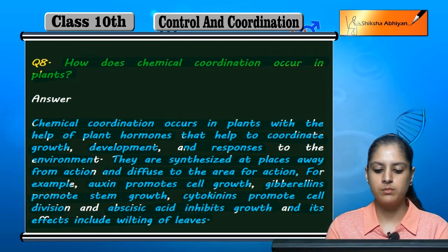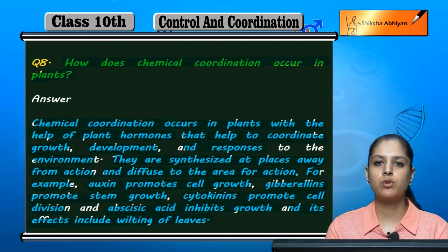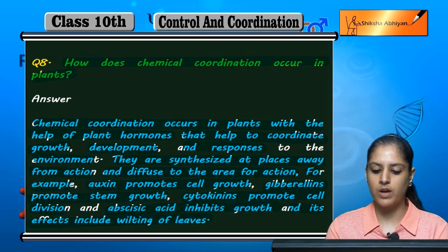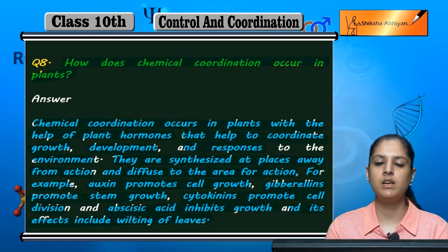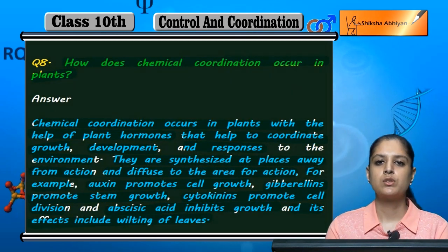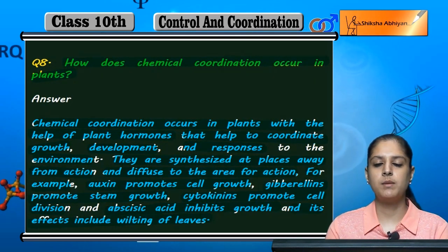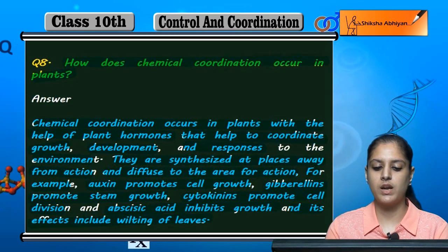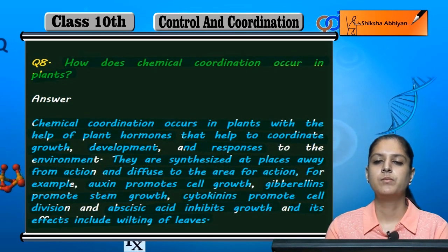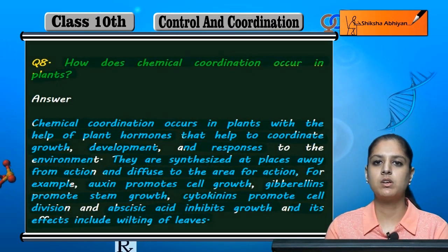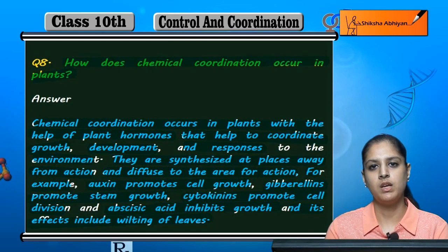Auxin promotes cell growth, gibberellins promote stem growth, and cytokinins promote cell division. These are all plant hormones whose growth and development are regulated by chemical coordination.